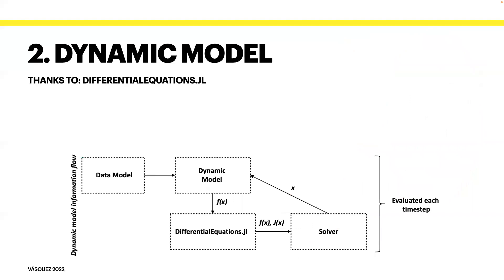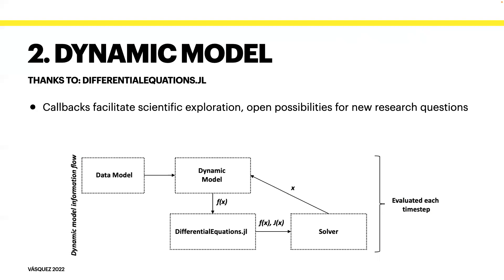I want to highlight a functionality of the DifferentialEquations.jl platform upon which GeneDrive.jl is constructed. Namely, values may be updated over the course of continuous real-time simulation using discrete callbacks to the solver, as explained by the information flow diagram here. Those callbacks facilitate experiments that explore the effect of exogenous perturbations to the biological system being modeled, opening the possibility for new scientific questions to be asked. One example use case is introducing a new organism type into the simulation after initialization, so simulating species invasion. Another is abruptly altering the environmental conditions to which simulated organisms are responding, so demonstrating climate change.